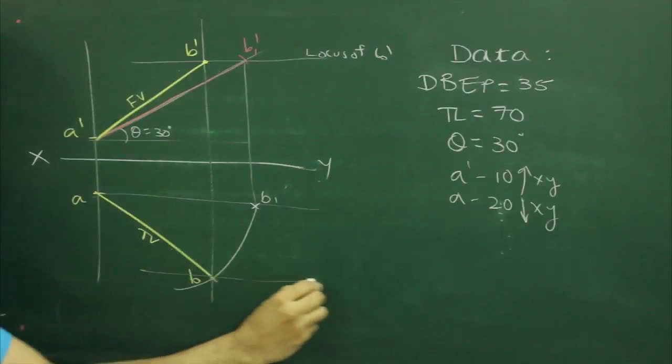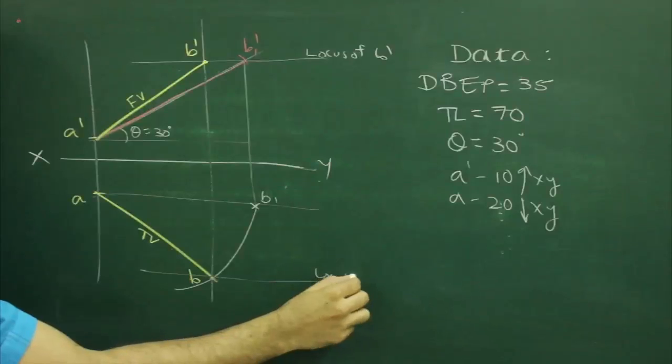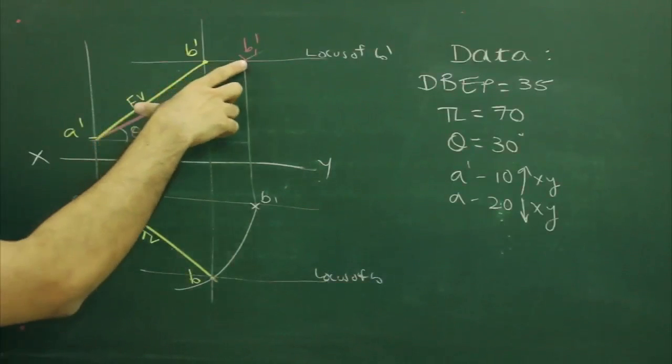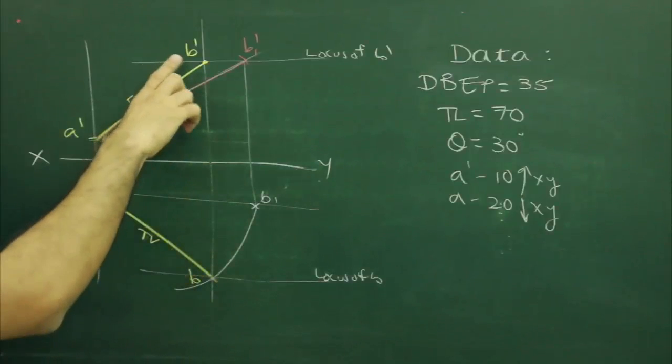Then to find true length, same like last sum, either we can mark directly A dash, B1 dash directly over here, or we can rotate.